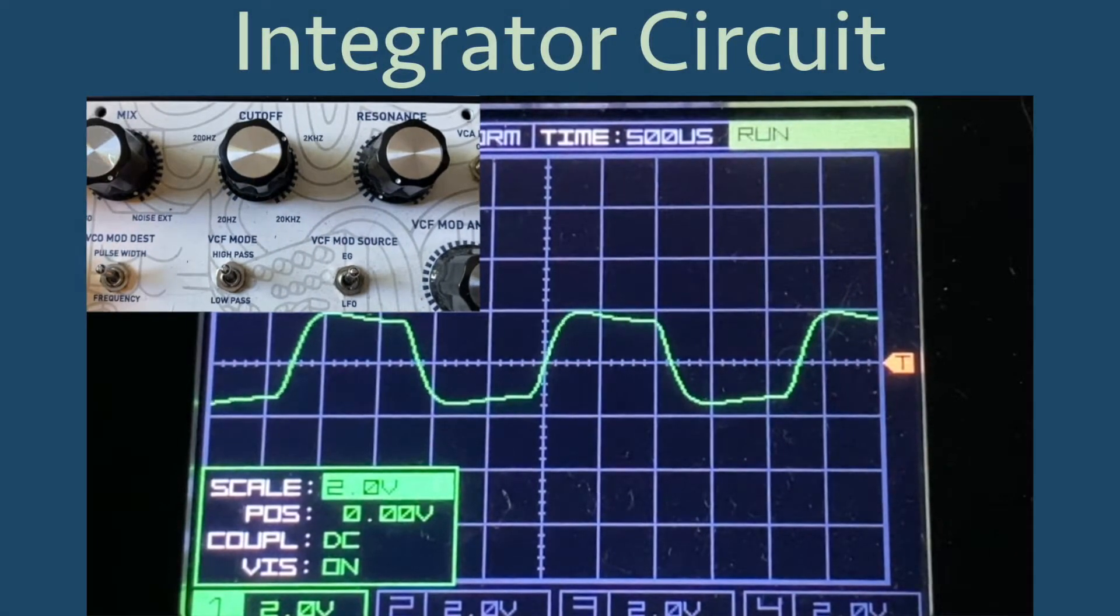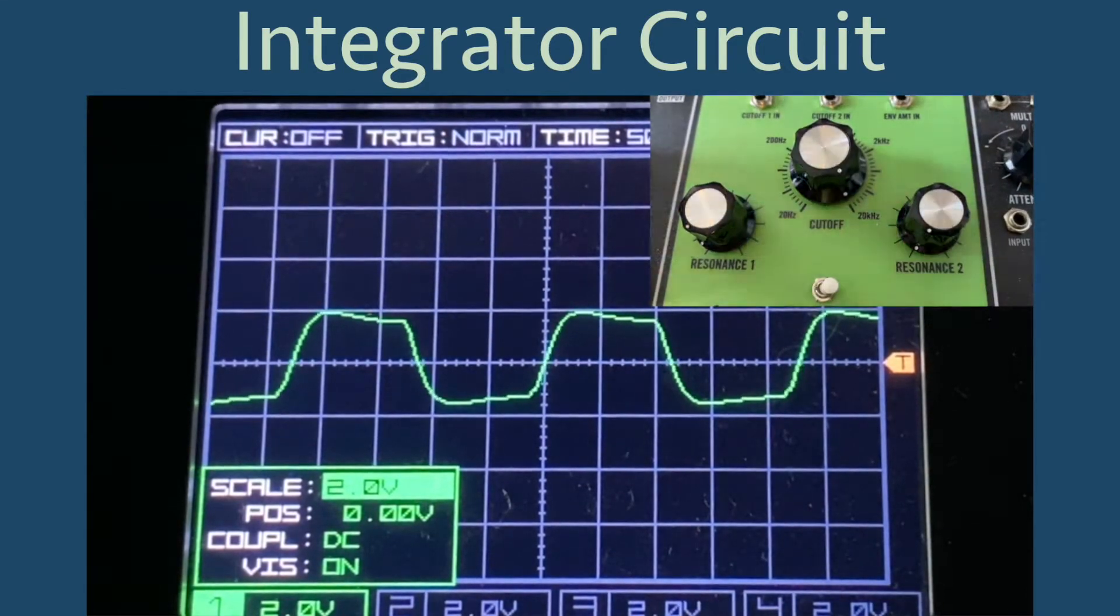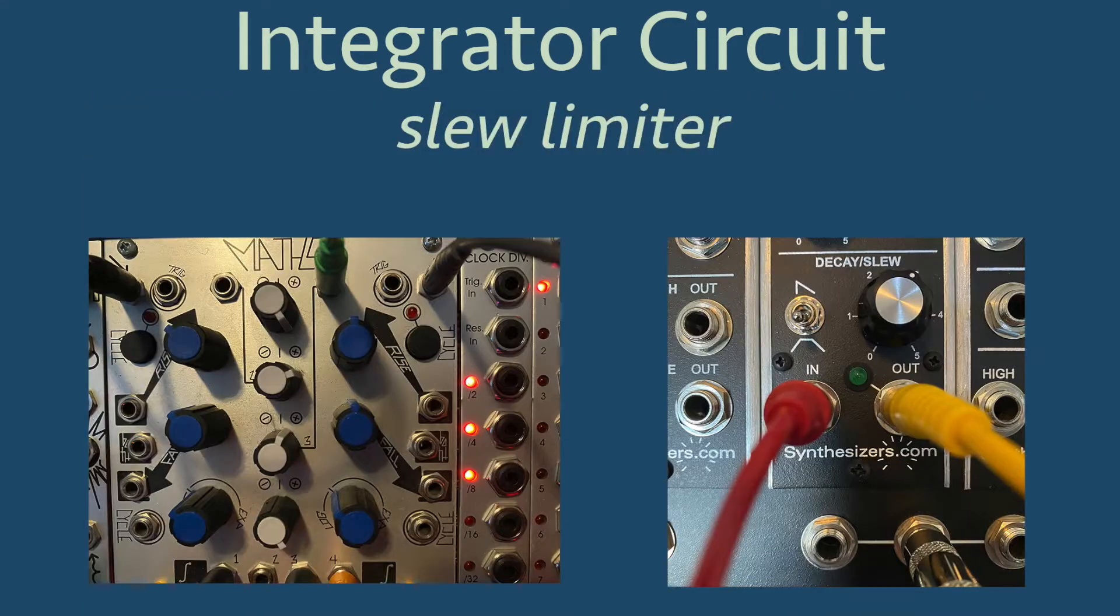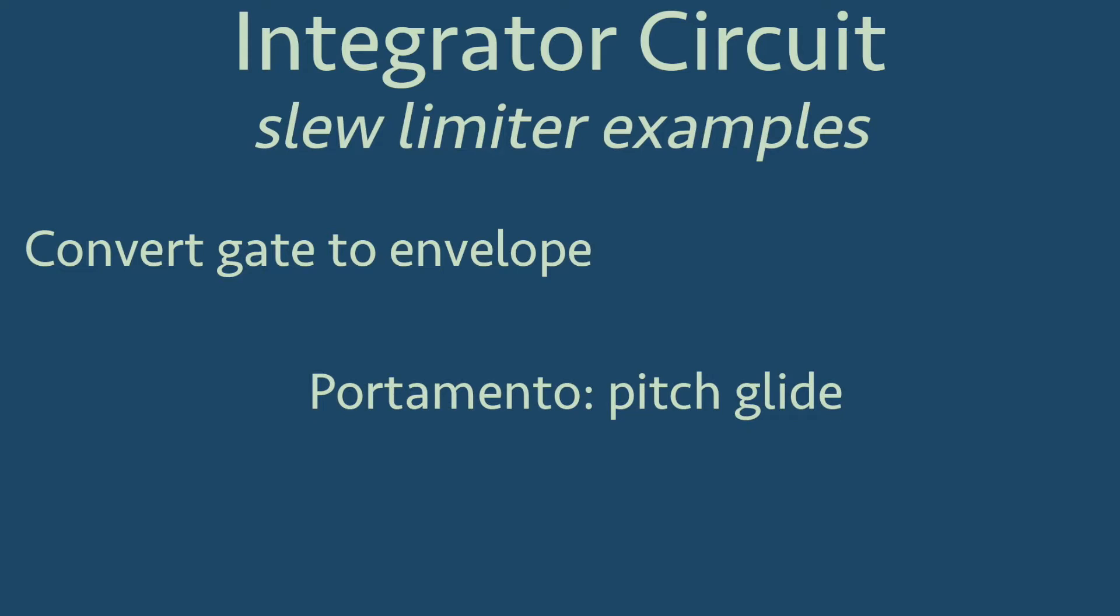In another video, we learned about the differentiator and integrator circuits on an analog synthesizer, which show up as the high-pass filter and low-pass filter, respectively. In this video, we will look at other applications of the integrator circuit: converting a gate signal to an envelope function, creating glide effects from one pitch to another, and converting one envelope function to a related but slower envelope function.